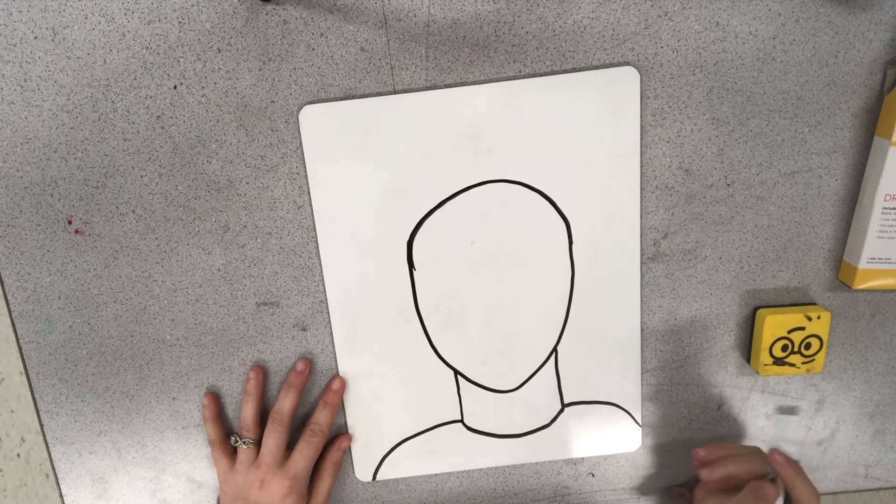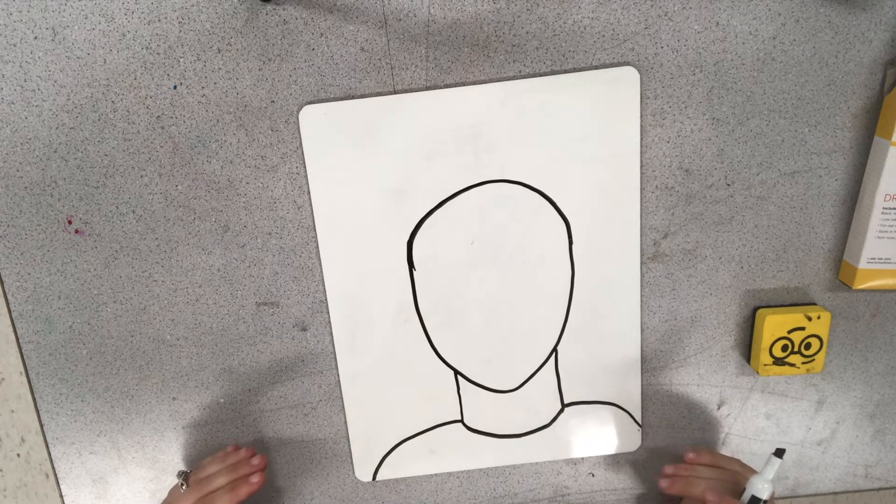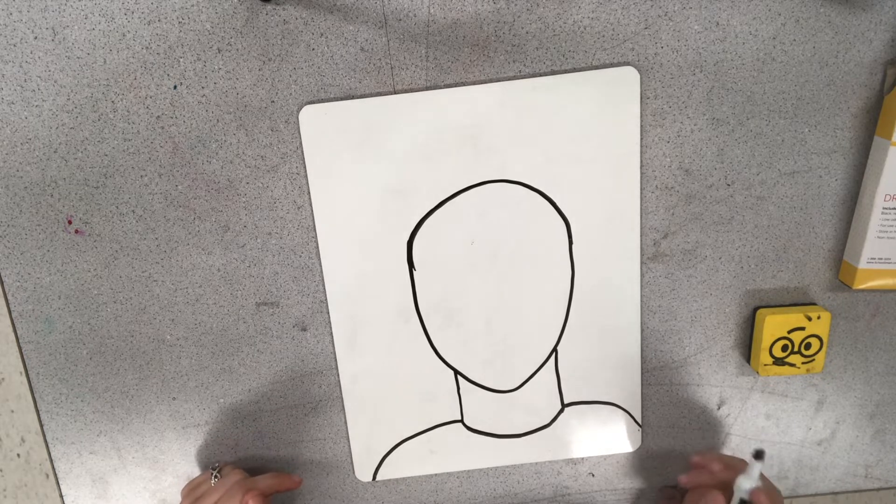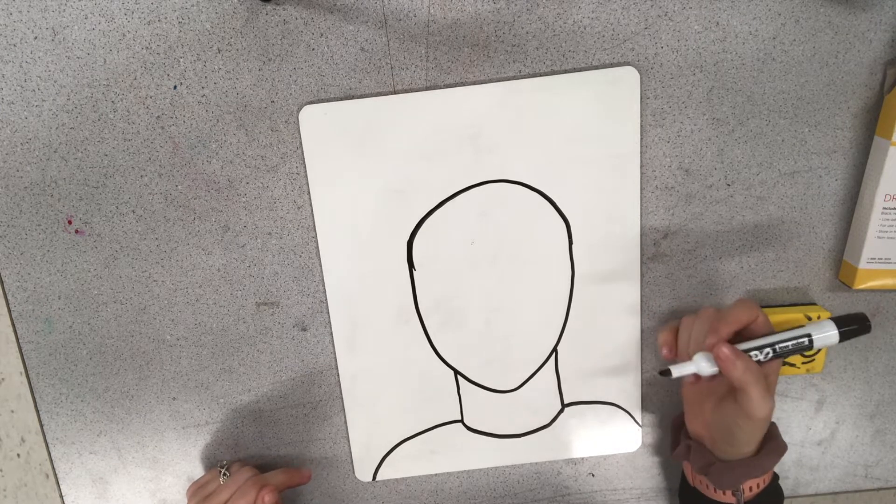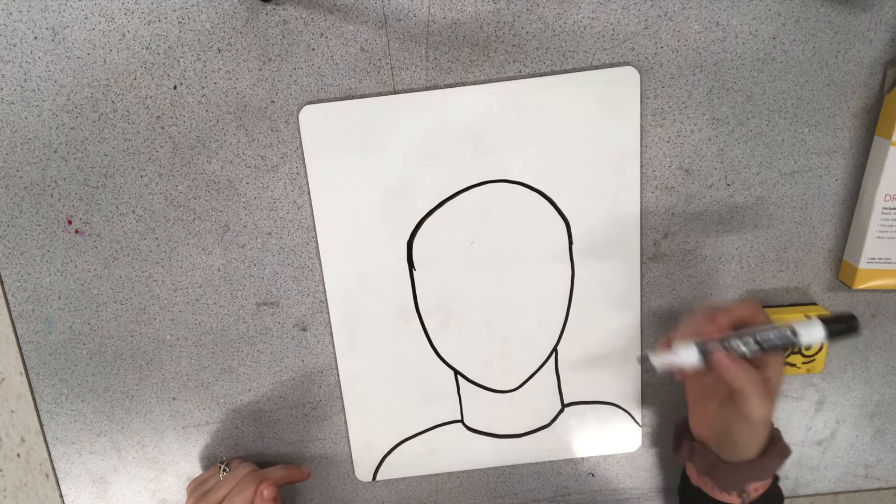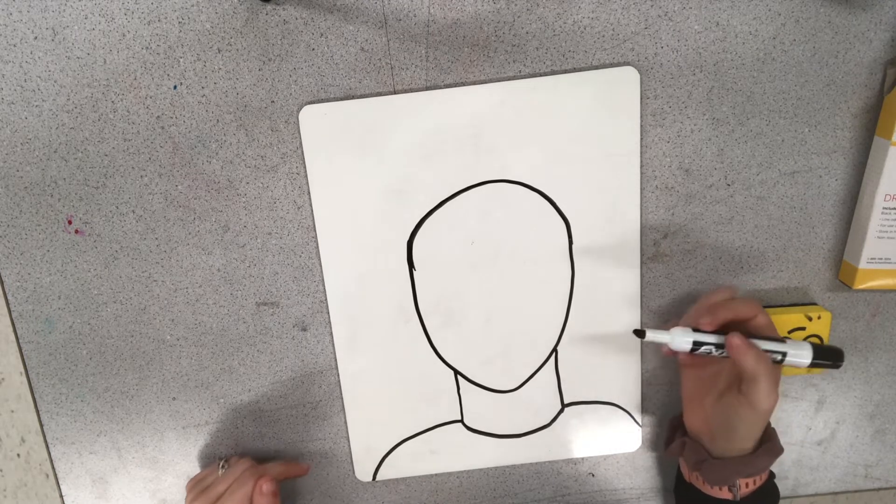Alright so next we are going to map out where everything is going to go on our face. So these lines are actually going to be erased. Do not draw them really hard. So don't press really hard with your pencil or else it's going to be really hard to erase them at the end. Draw really lightly, barely touch the paper, just have it enough so that you can see them and you know where they are.